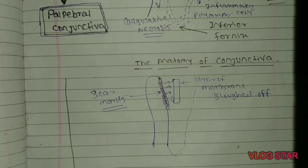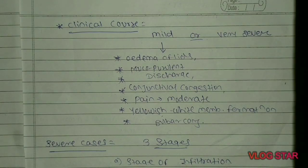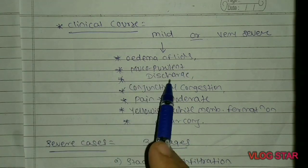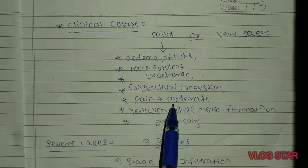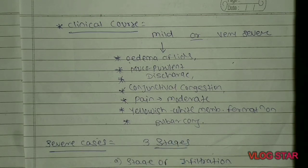The clinical course of Membranous Conjunctivitis may vary from mild to severe. In mild cases, there is only the presence of inflammatory signs: edema of lids, mucopurulent discharge, conjunctival congestion, moderate pain, and formation of a yellowish-white membrane mainly on the palpebral conjunctiva and in some cases on the bulbar conjunctiva.